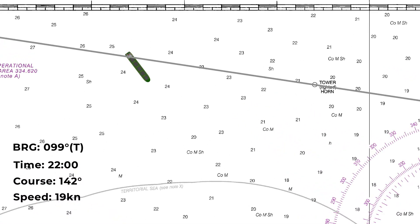Now we know we measured that from our position, so our line is coming out this side of the tower. We know that it's a line of position from a terrestrial object, so we're going to illustrate that with a single open arrow pointing away from the object. Finally we know the time of this line of position so we're just going to add that on as well.